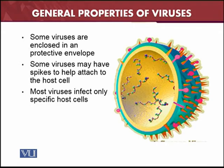Some viruses are enclosed in a protective envelope. Viruses are made up of three things: RNA, capsid, and envelope (or non-enveloped). Some viruses have an envelope which is a protective coat surrounding the capsid. Some viruses may also have spikes on the envelope, which help in attaching to and entering the host cell — a very important step in the life cycle of the virus.